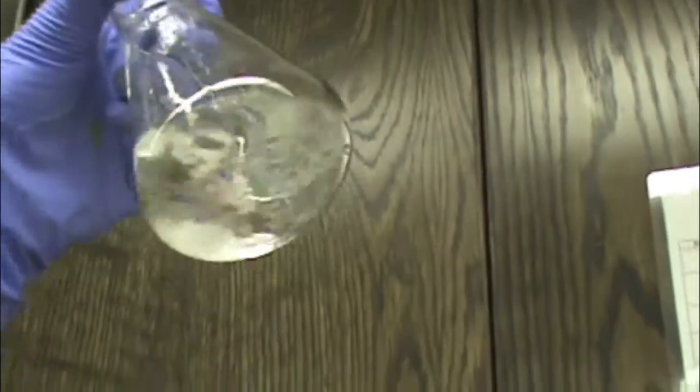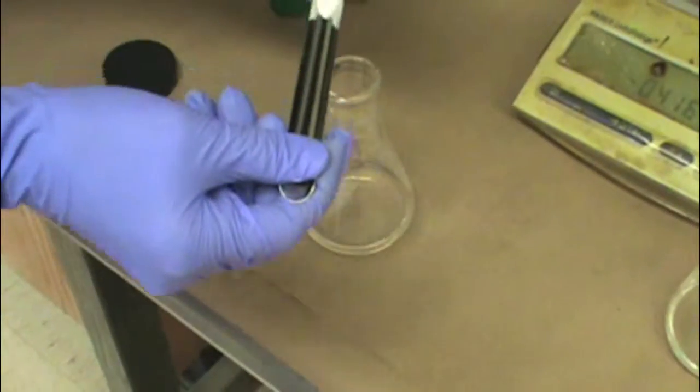If you look underneath your Erlenmeyer flask, you see that all of the sodium sulfate has clumped in one spot. That means we need to add another scoop.